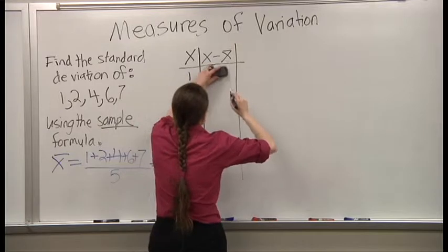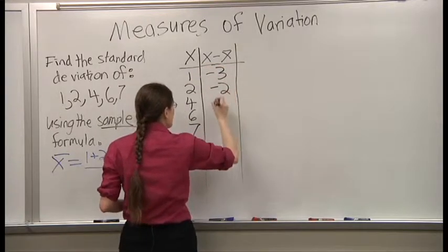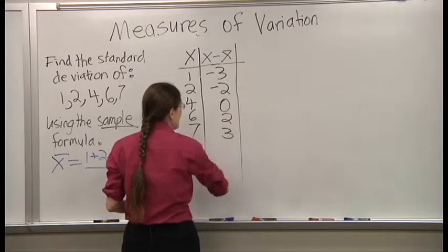So that's going to be a negative 3, negative 2, 0, 2, and 3.